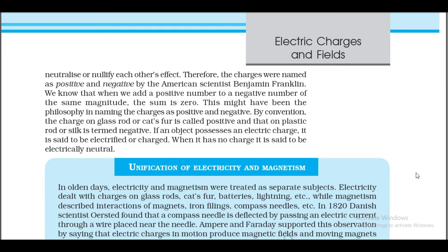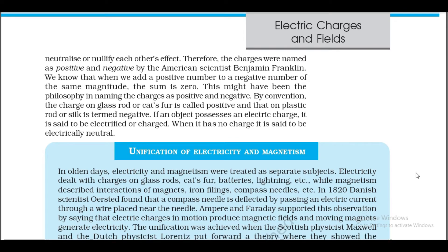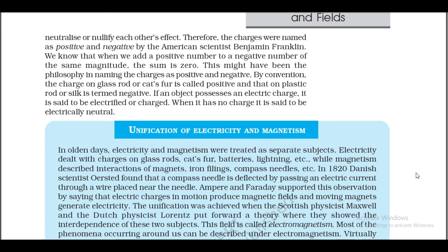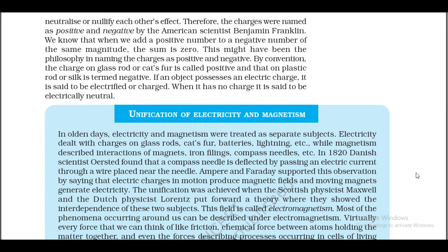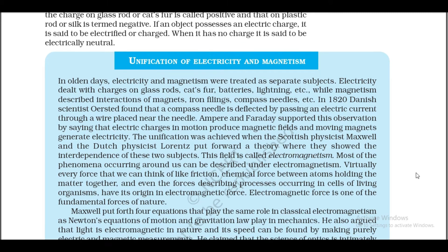We know that when we add a positive number to a negative number of the same magnitude, the sum is zero. This might have been the philosophy in naming the charges as positive and negative. By convention, the charge on a glass rod or cat's fur is called positive, and that on a plastic rod or silk is termed negative. If an object possesses an electric charge, it is said to be electrified or charged; when it has no charge, it is said to be electrically neutral.